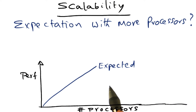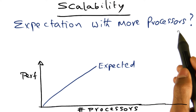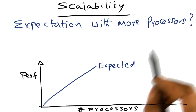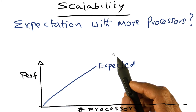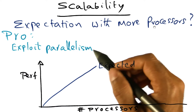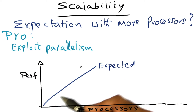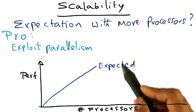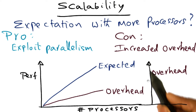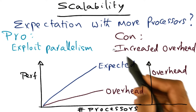However, there is overhead associated with increasing the number of processors in terms of maintaining cache coherence when you have sharing that is happening for shared data. And so therefore, the pro in adding more processors is the fact that you can exploit parallelism — that's the reason why you're able to get this expectation of increased performance. But unfortunately, as you increase the number of processors, there is increased overhead.